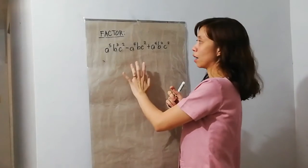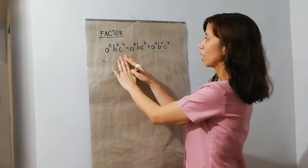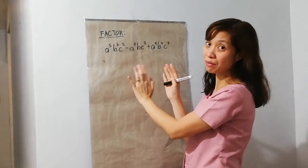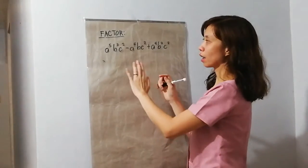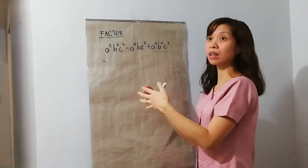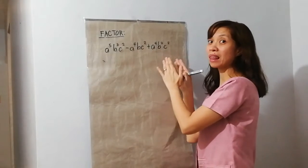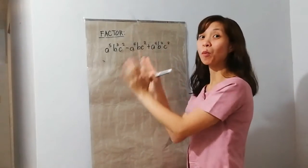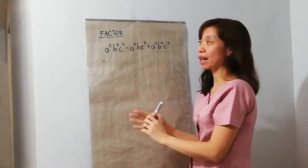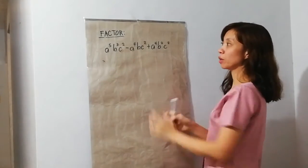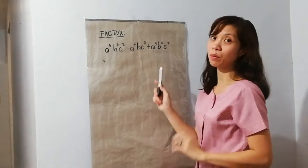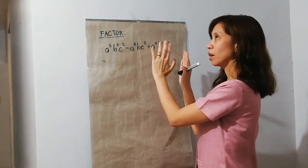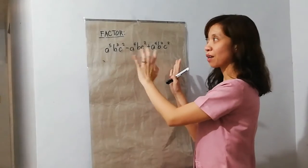For our next example, kung mapapansin ninyo, puro siya variables — ito yung pinakamadaling i-factor. Kasi, yung sinabi ko, tingnan lang ninyo kung alin yung common sa kanilang lahat ng terms, at kung alin yung pinakamaliit na exponent, yun yung common factor. So, in this case, we have 3 terms. So, dapat yung nasa loob ng parentheses, 3 terms din.